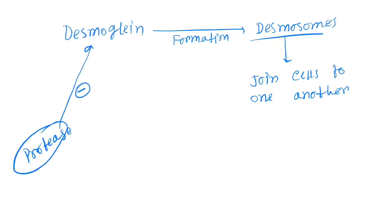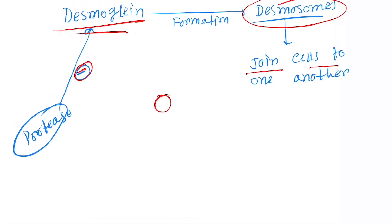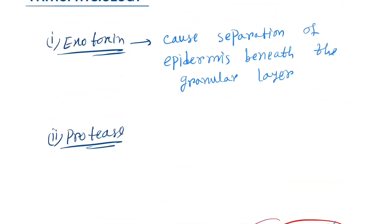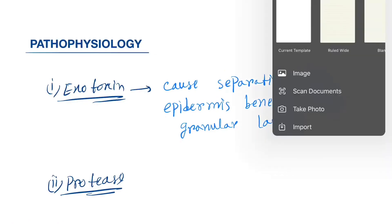Inhibition of desmoglein means no formation of desmosomes, so no joining of cells to each other. The cells will be detached and won't adhere to each other. This causes Staphylococcal Scalded Skin Syndrome.